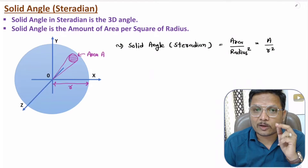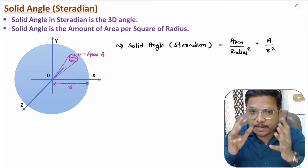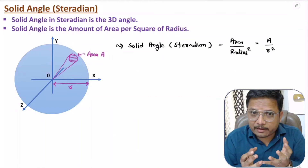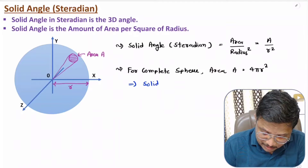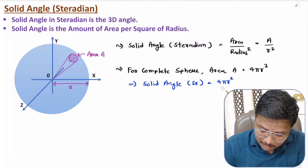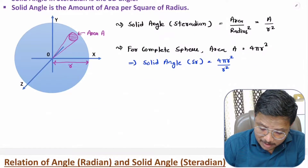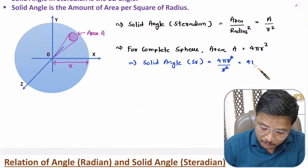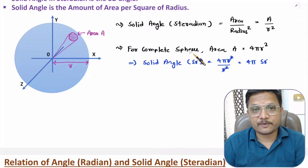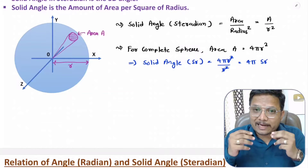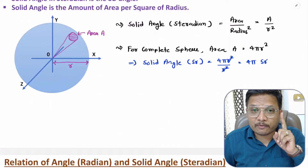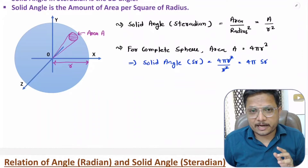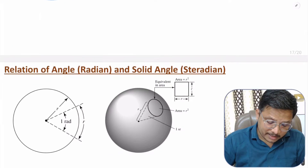If you want to calculate solid angle for a complete sphere, the surface area of a complete sphere is 4πr². So the solid angle for a complete sphere = 4πr² divided by r², and r² cancels out, giving 4π steradian. So for a complete sphere, solid angle is 4π steradian, while for a complete circle, angle is 2π radian.